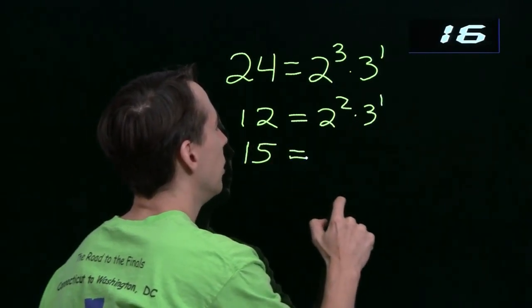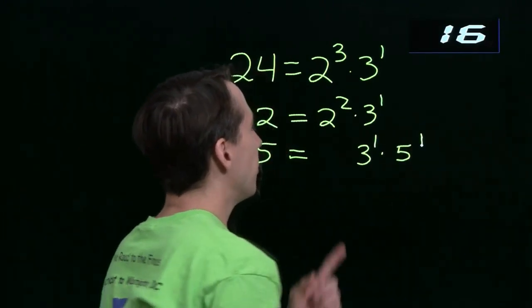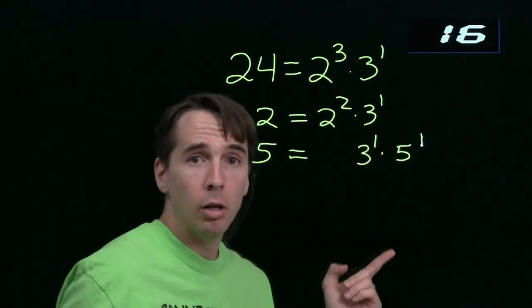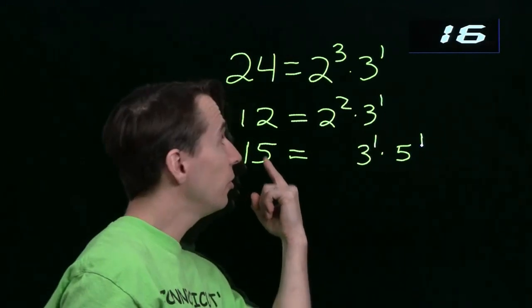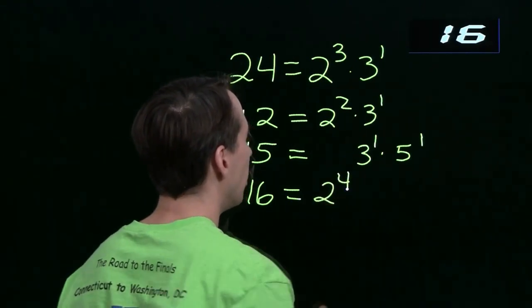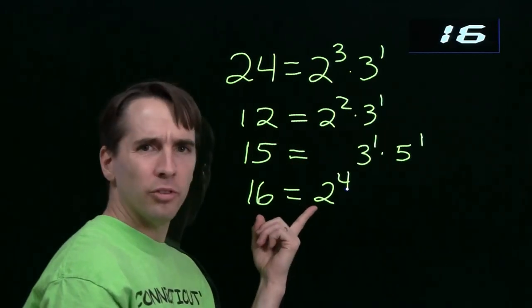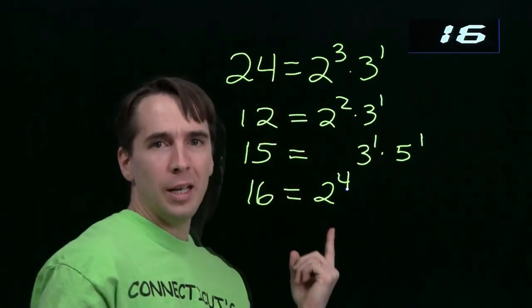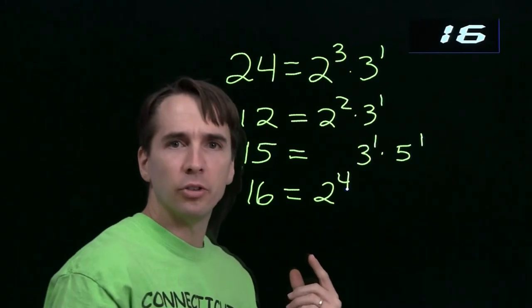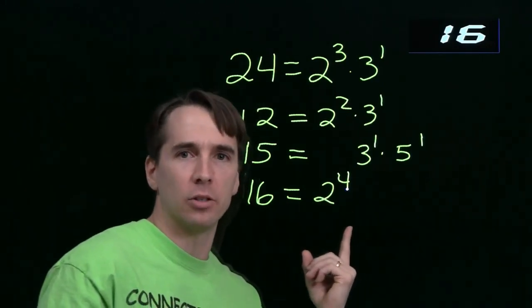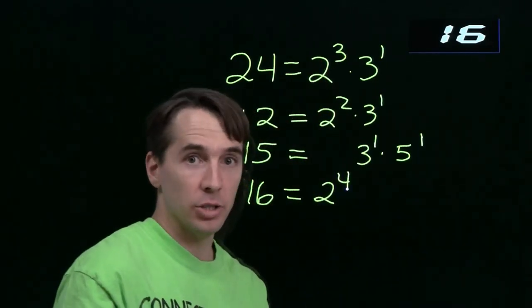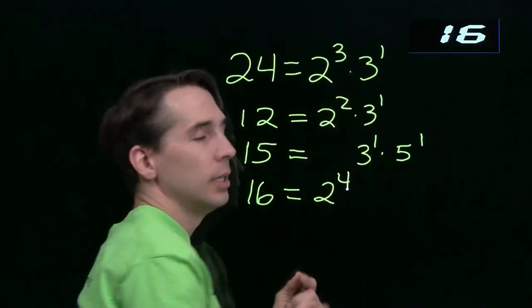Let's take a look at 15. 15 is 3 to the first times 5 to the first. Now 24 has enough 3s to be a multiple of 15, but 24 doesn't have any 5s at all, so 24 is not a multiple of 15 — that means 15 is not a divisor of 24. How about 16? 16 is just 2 to the fourth — that's four 2s. Any multiple of 16 is going to have at least four 2s, so 24 can't possibly be a multiple of 16. That means 16 can't be a divisor of 24, because 16 has too many 2s. Any divisor of 24 can't have more than three 2s, and also can't have more than one 3.